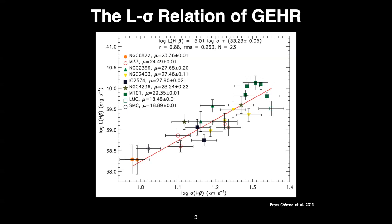Why do we use H-beta? Because it's essentially easy to observe — you can use essentially any recombination line. H-alpha would be easier in principle, but at that time it would be contaminated by the nitrogen line. When the work started, H-beta was used, and at that time the detectors were more sensitive in the blue region. But you can also use H-alpha.